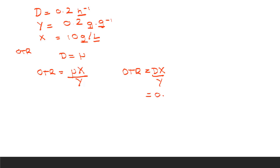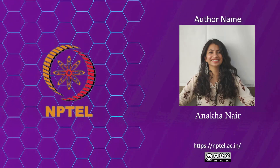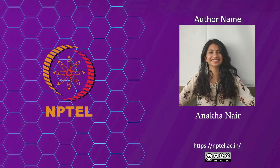The 0.2 values cancel out, and we are left with 10 gram per liter per hour. So this is the answer. Thank you so much for watching.